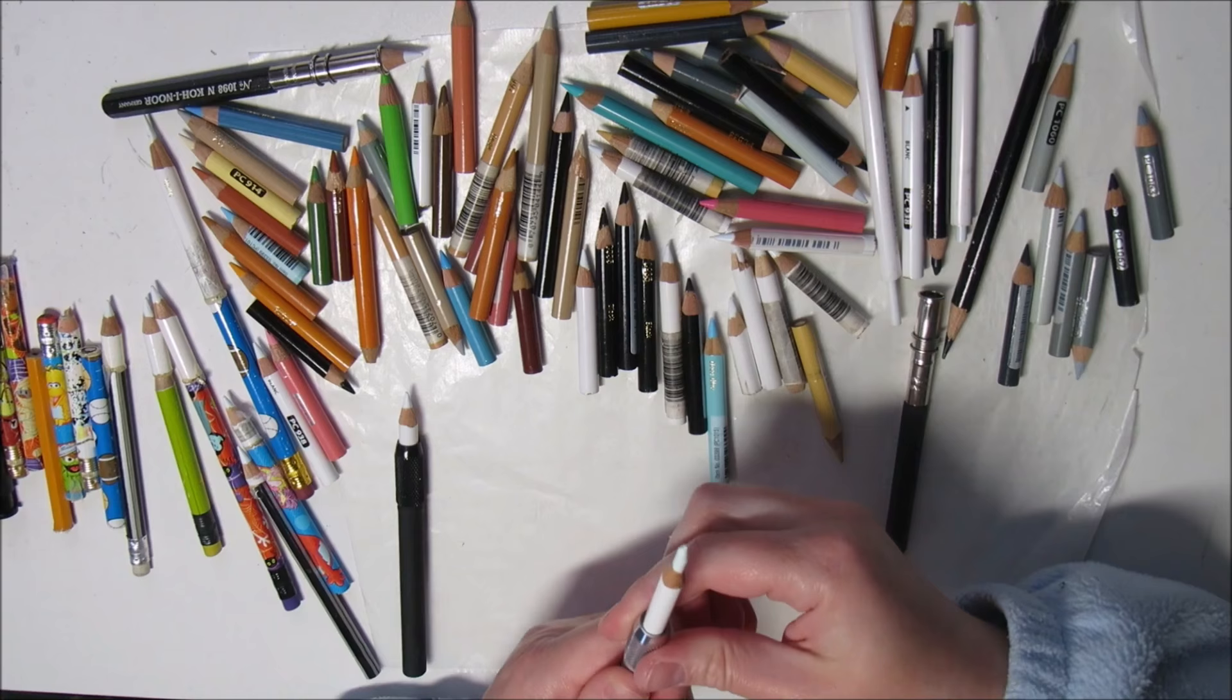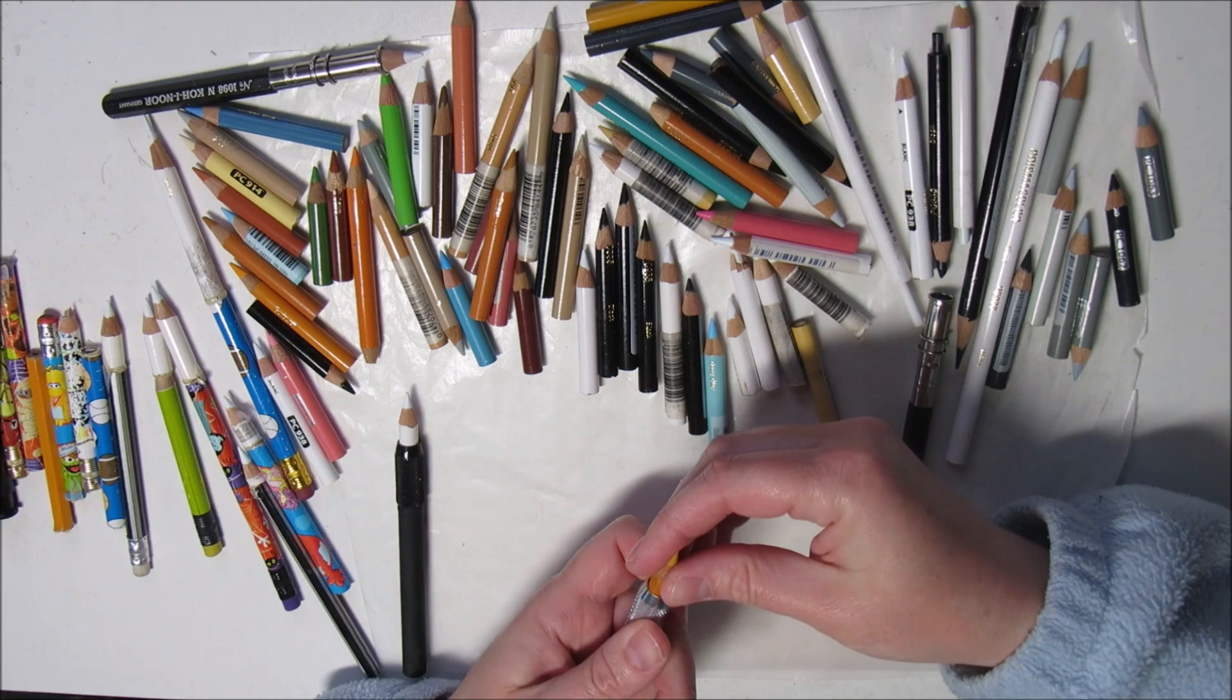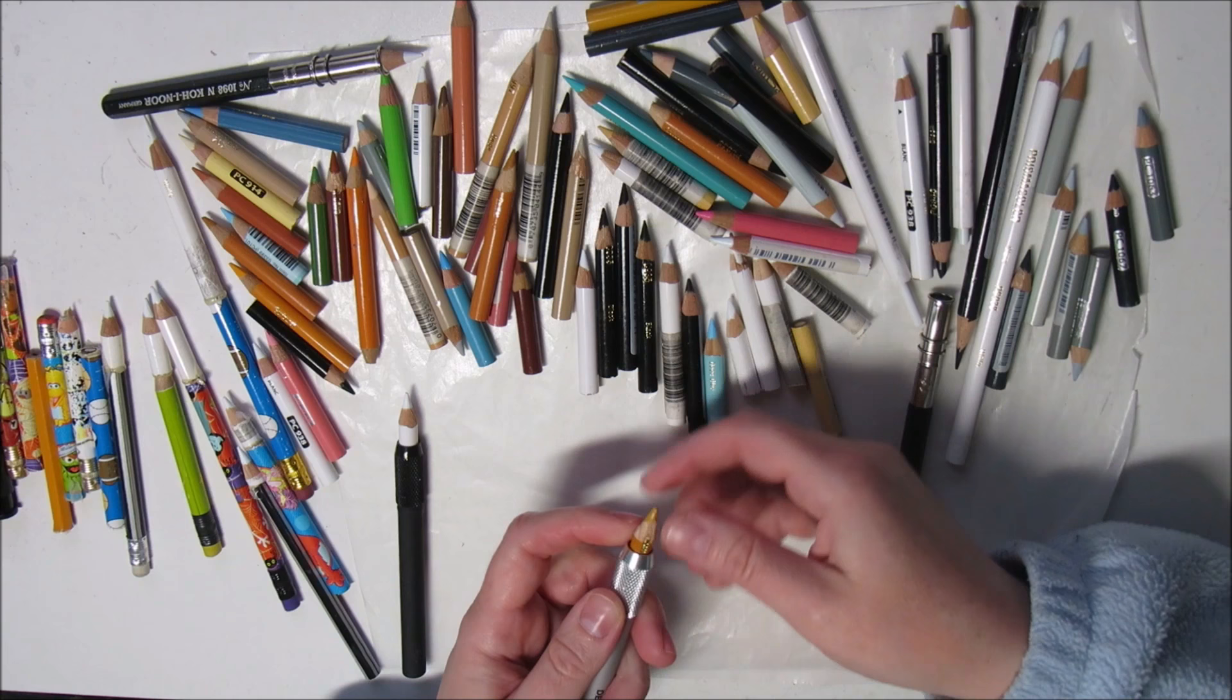Derwent makes a nicer kind of extenders in my opinion. The whole barrel is hollow so any size of pencil can fit. And because they use a tightening ring, even tiny little pencils can fit. So that's wonderful.